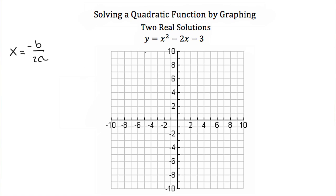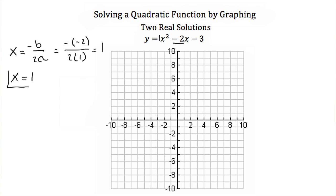We use the formula x is equal to negative b over 2a. This quadratic is already in standard form, which means a is 1 and b is negative 2. So if I plug that in, I'll have negative negative 2 over 2 times 1, which is equal to 1. So our axis of symmetry is the line x is equal to 1.